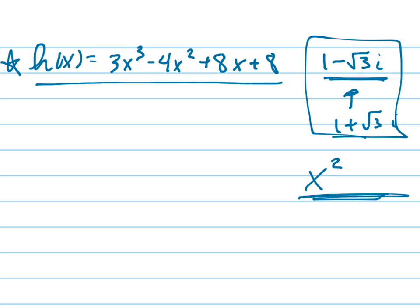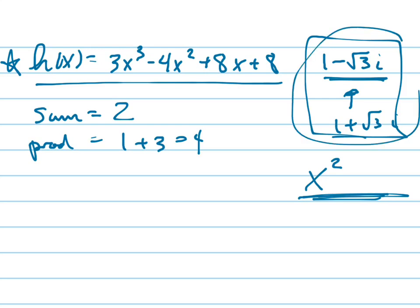Here's the trick. The sum of those zeros is 2, and the product of those zeros is 1 plus 3, which is 4. So the product of the two linear factors from those two zeros is x squared minus 2x plus 4, because the rule is always x squared minus the sum times x plus the product.